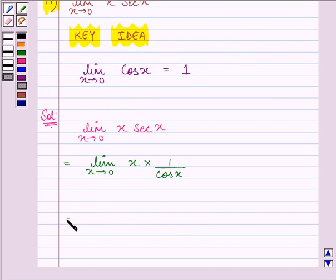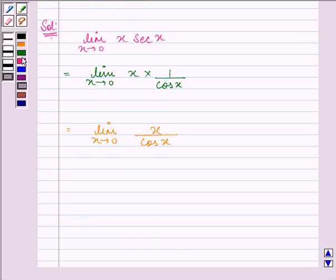Which can be written as limit x approaches 0, x upon cos x. Now taking limits separately we have limit x approaches 0, x upon limit x approaches 0, cos x.